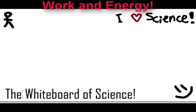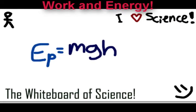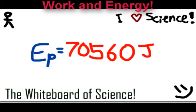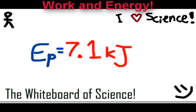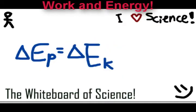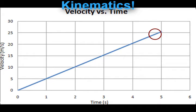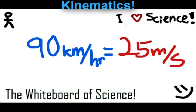Let's turn to the whiteboard of science. We know that the potential energy is equal to mgh. And when we sub in the numbers, we get approximately 70,560 joules. This is also equal to 70.1 kilojoules. Since it's a closed system, the change in potential energy is equal to change in kinetic energy. And also, the change in kinetic energy is equal to work. Ski jumpers usually reach a speed of 90 kilometers per hour, or 25 meters per second, at the bottom of the hill.